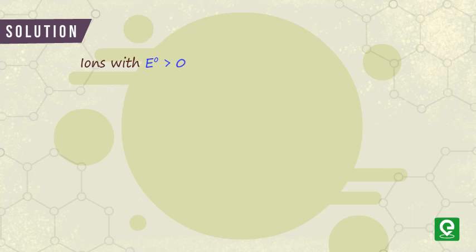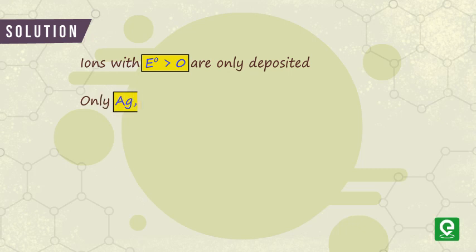As we know, in an aqueous solution, only those ions which are less electropositive than hydrogen, that is with E° greater than zero, will be deposited. Therefore, in this case, only Ag, Hg, and Cu will be deposited on passing electricity through aqueous solution of these ions. Mg will not be deposited.